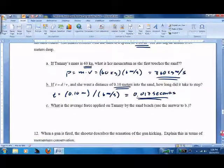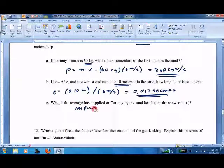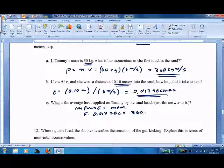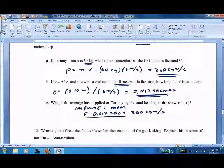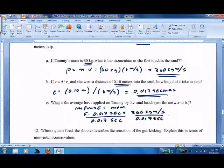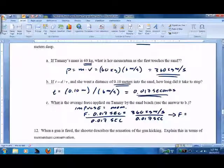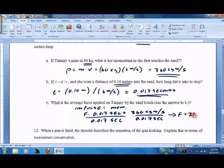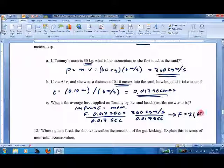Now we know that impulse equals momentum, so force times 0.017 seconds equals 360 kg meters per second. Divide both sides, we get force equals 21,000 newtons. She hit the sand pretty hard, I hope she's okay.